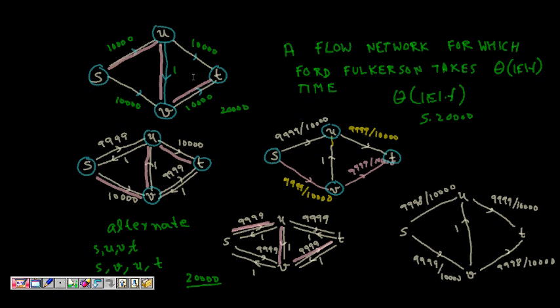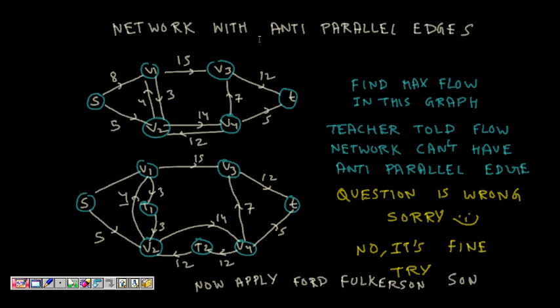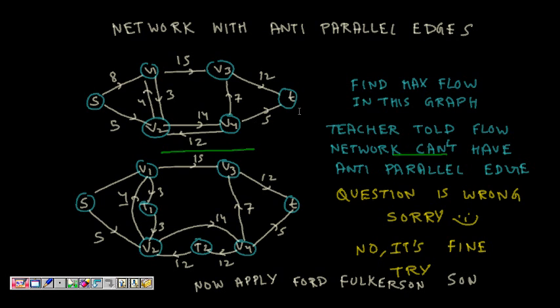The next thing is that you have read everything in Ford-Fulkerson algorithm, you are now an expert you can solve any problem. But suddenly in the exam you see something like this: that 4 is going from V2 to V1, 3 is going from V1 to V2, then V2 to V4 it's 14, V4 to V2 it's 12. And this is the network flow graph. Now you are really confused. What is this? The teacher had told that flow network can't have any anti-parallel edge. They had told that if U comma V belongs to an edge in the flow network graph then V comma U should not be there in the flow network and that is correct. This is important for running Ford-Fulkerson algorithm.